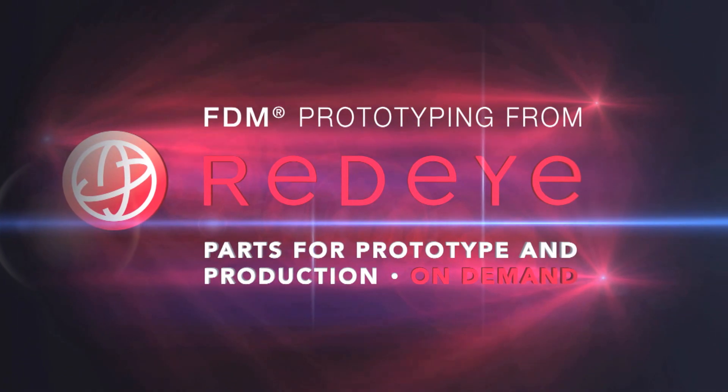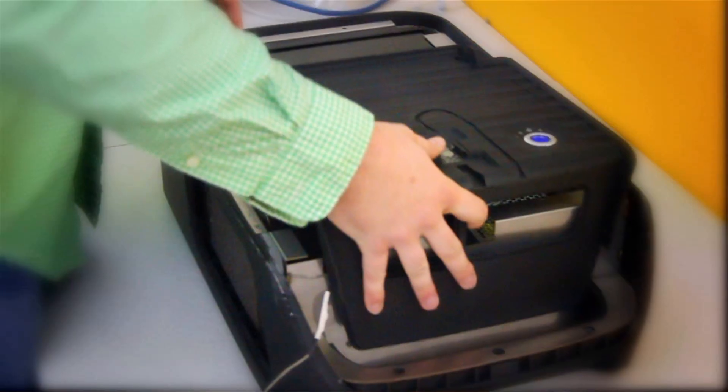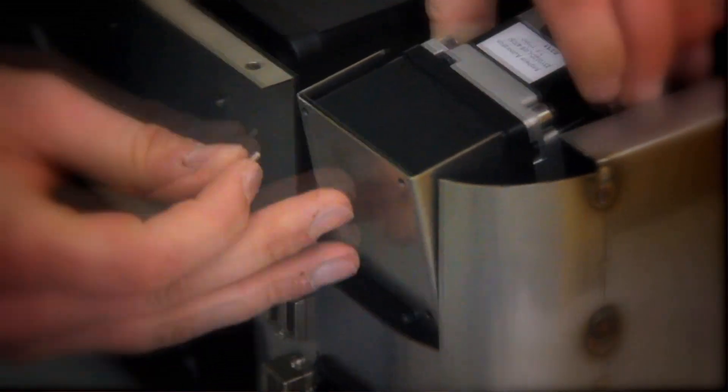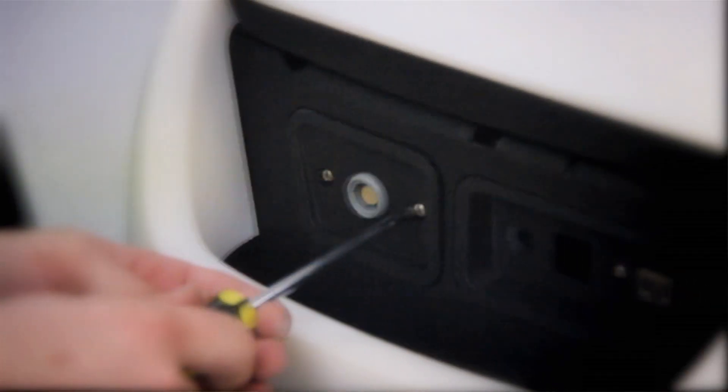We decided from the beginning that we needed an FDM model when we got to this stage of the project. We're making working prototypes so we're putting all kinds of components, transformers, RF generators. All these things are going in there and we're bolting this thing together. We're driving screws through the plastic. It needed to hold up.